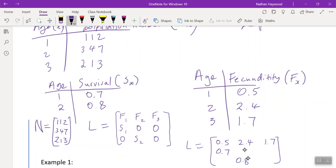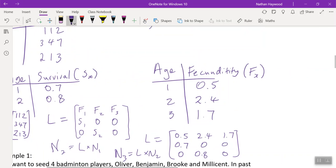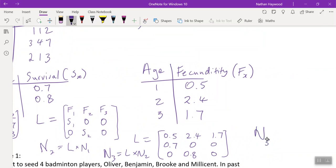So to find out, this is n1, the numbers after one year. So the end of the first year, that's how many we have. So to find out n2, the numbers after the second year, you would do L times n1. Or remember n2 is equal to this, so you could find n3 is equal to L squared times n1.